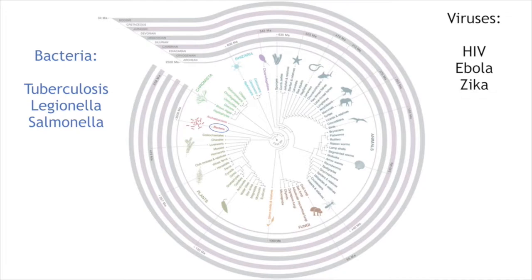We're really interested in fungi. This is the kingdom fungi, and it includes the mushrooms that you eat or find on trees and decaying matter, the moulds you find on food that's been left sitting a little too long, and also yeasts — things that are used to make beer, for instance.